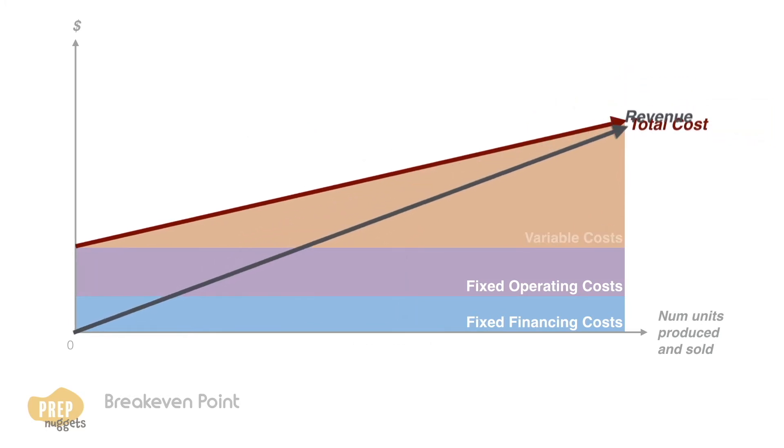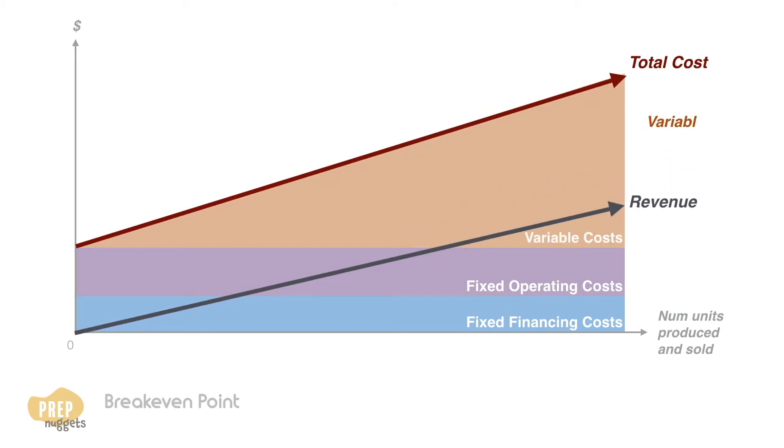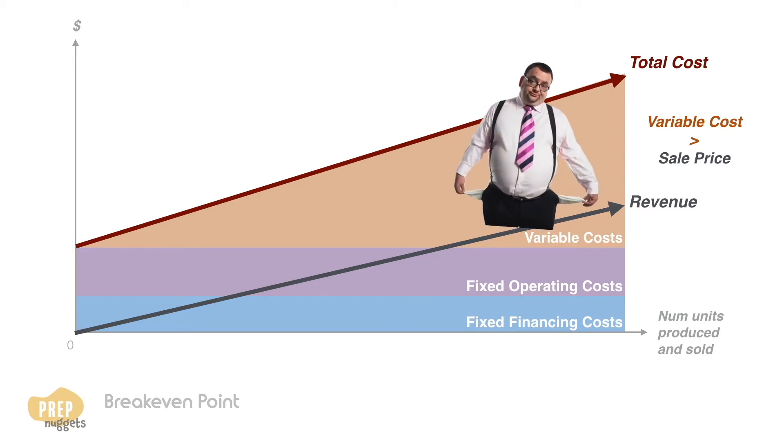And if the sales price per unit cannot even cover the variable cost, the break-even quantity is infinite and the company should probably fold up.